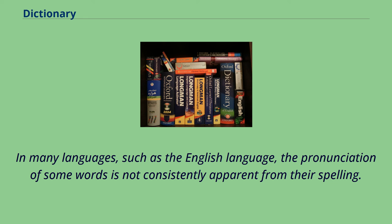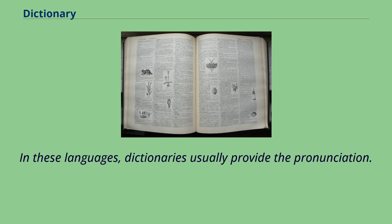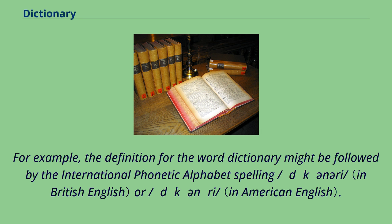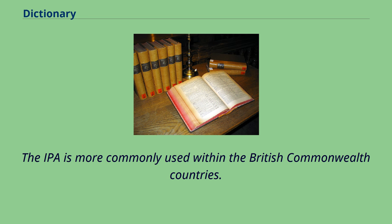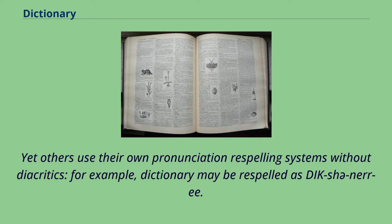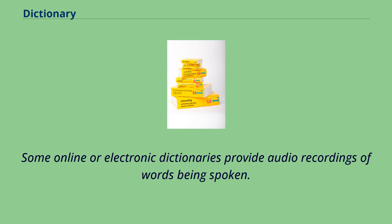In many languages, such as English, the pronunciation of some words is not consistently apparent from their spelling. In these languages, dictionaries usually provide the pronunciation. For example, the definition for the word dictionary might be followed by the International Phonetic Alphabet spelling /ˈdɪkʃənɛri/. American English dictionaries often use their own pronunciation respelling systems with diacritics; for example, dictionary is respelled as dĭk′shə-nĕr′ē in the American Heritage Dictionary. The IPA is more commonly used within the British Commonwealth countries. Some online or electronic dictionaries provide audio recordings of words being spoken.